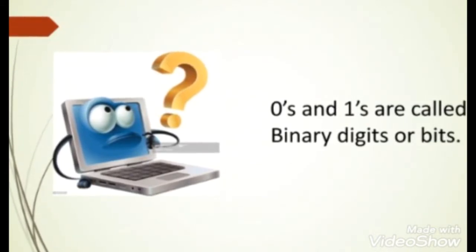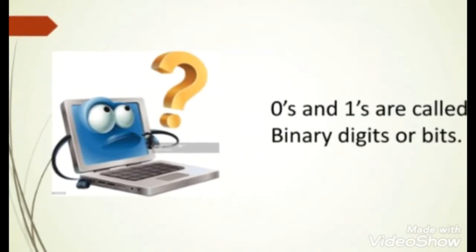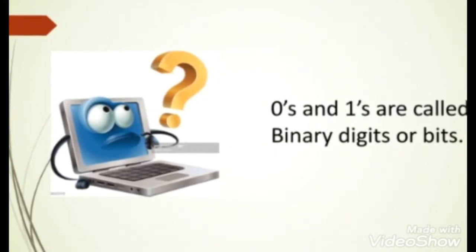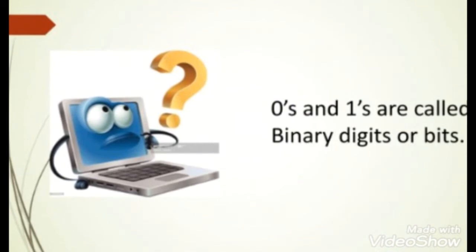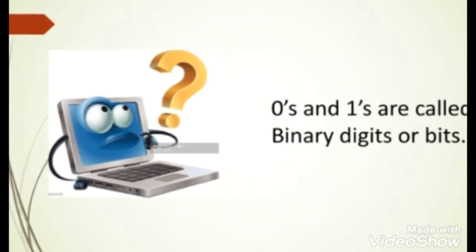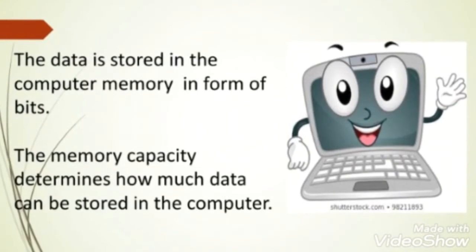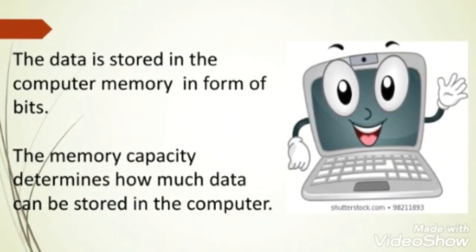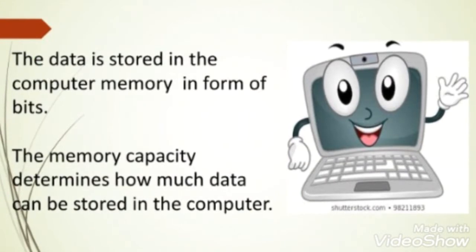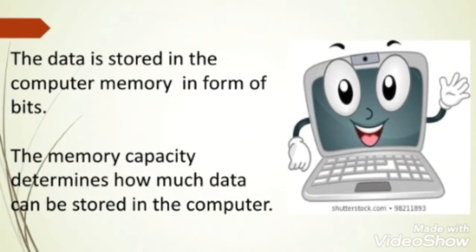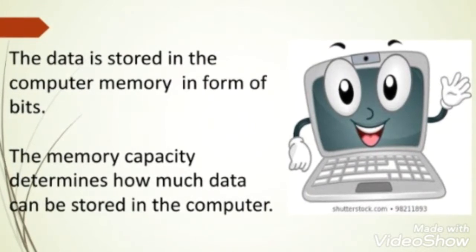A computer understands binary language, which is made of zeros and ones. These zeros and ones are called binary digits or bits. As we know, a computer stores data in computer memory, and that data is stored in the form of bits, because a computer understands only two digits: zeros and ones.